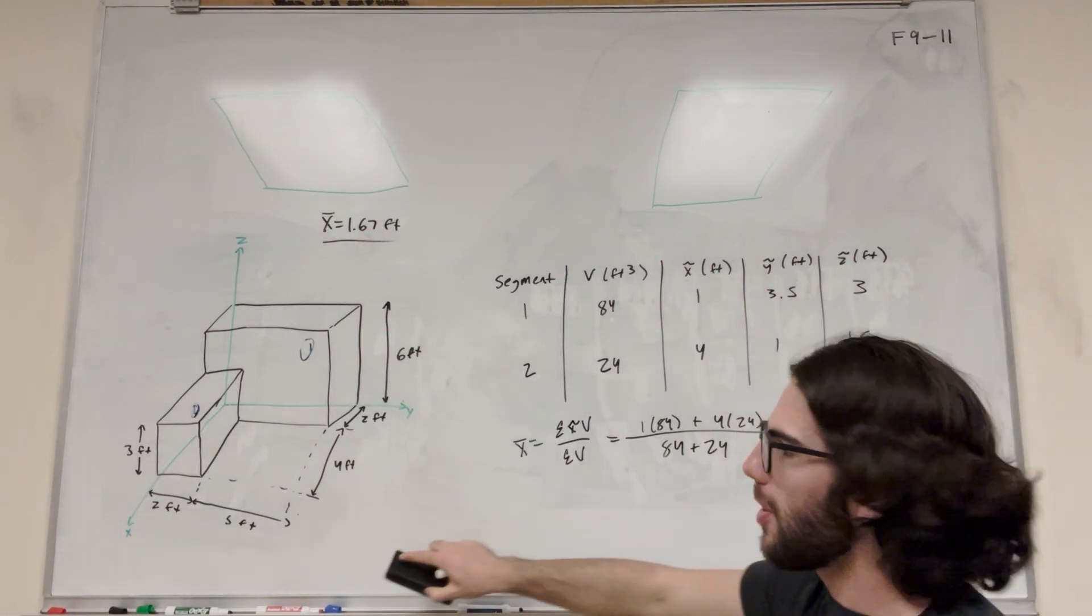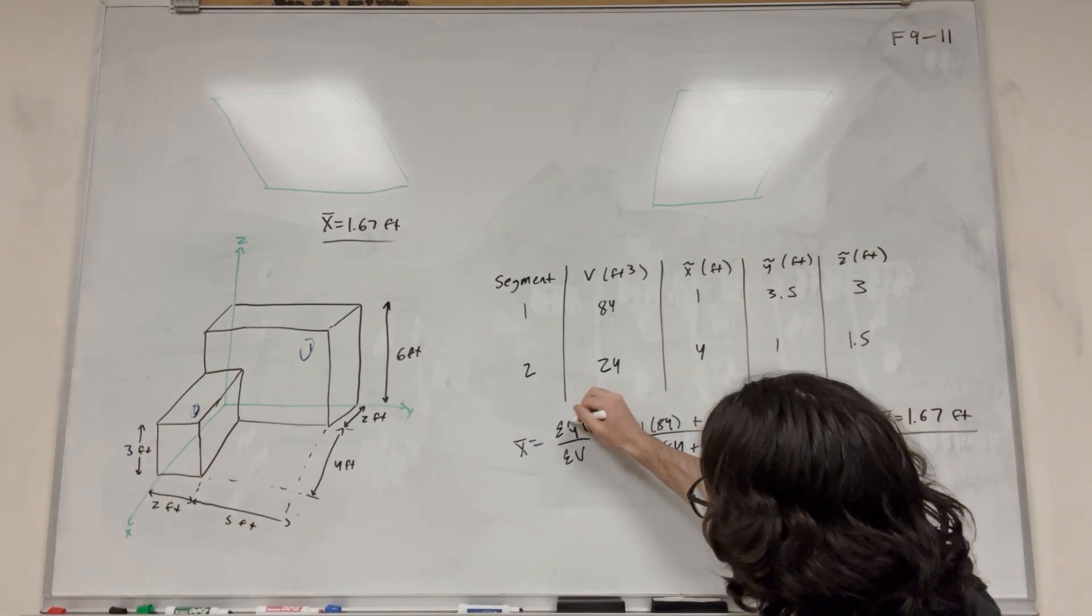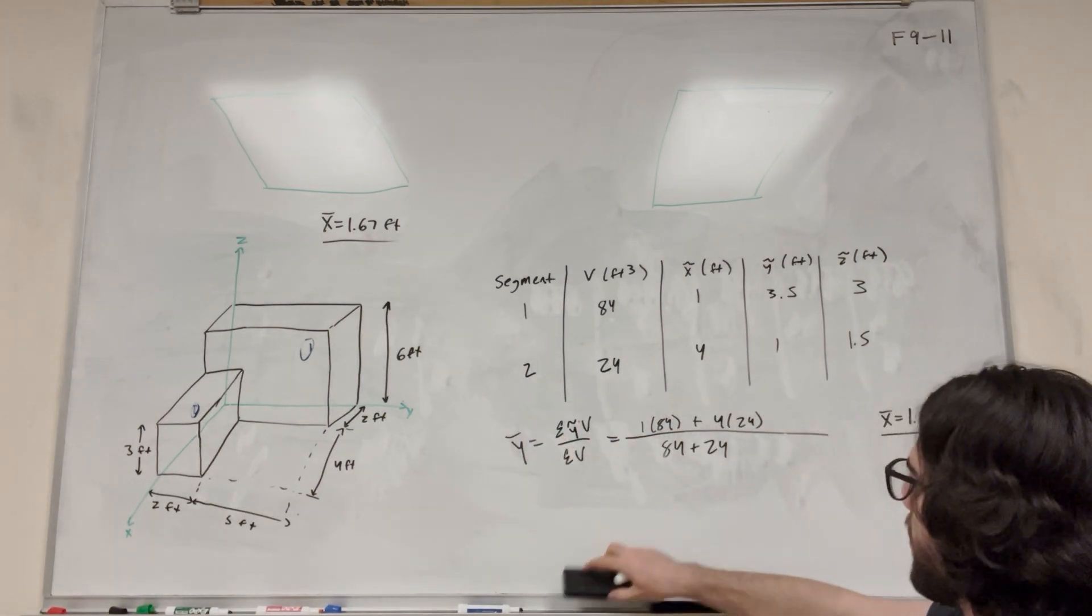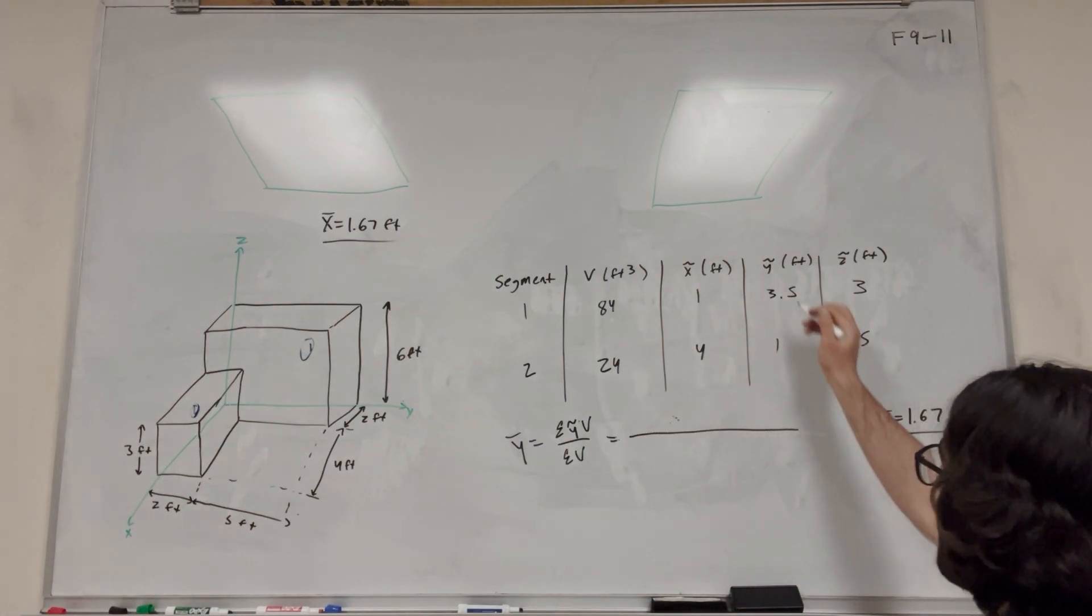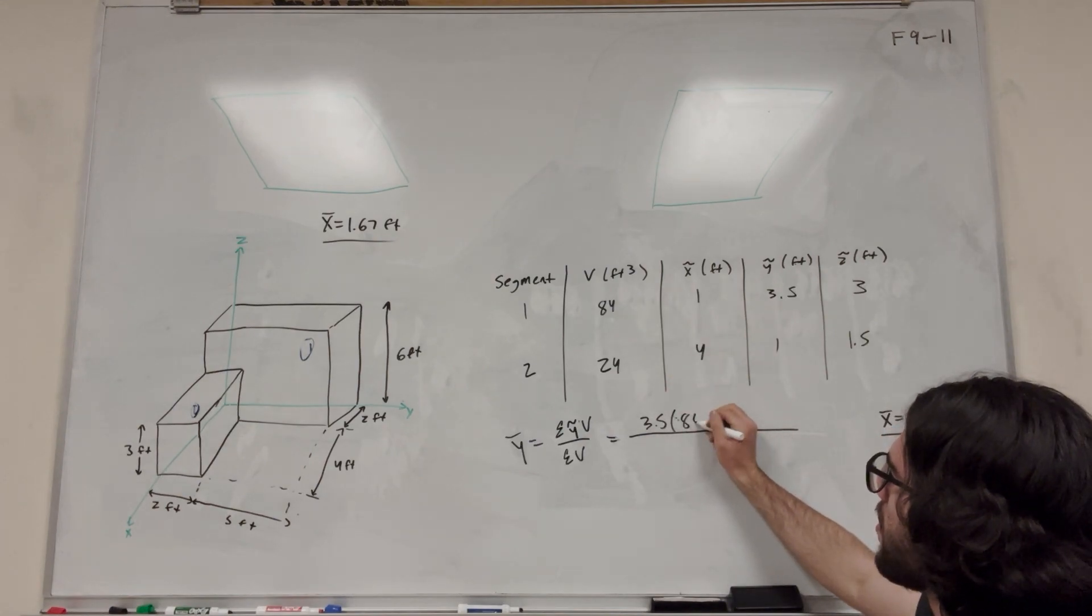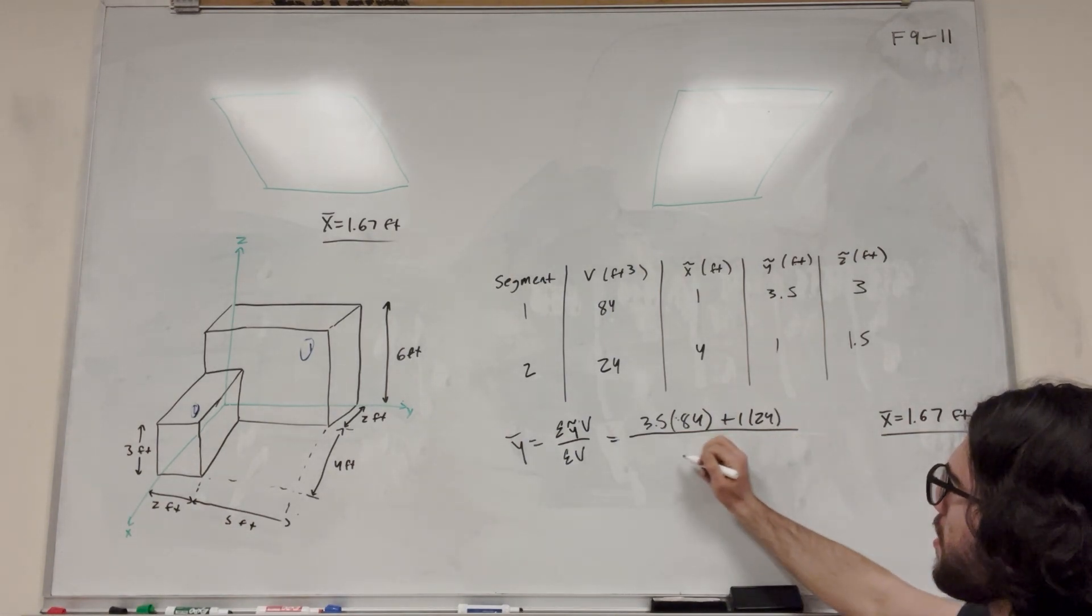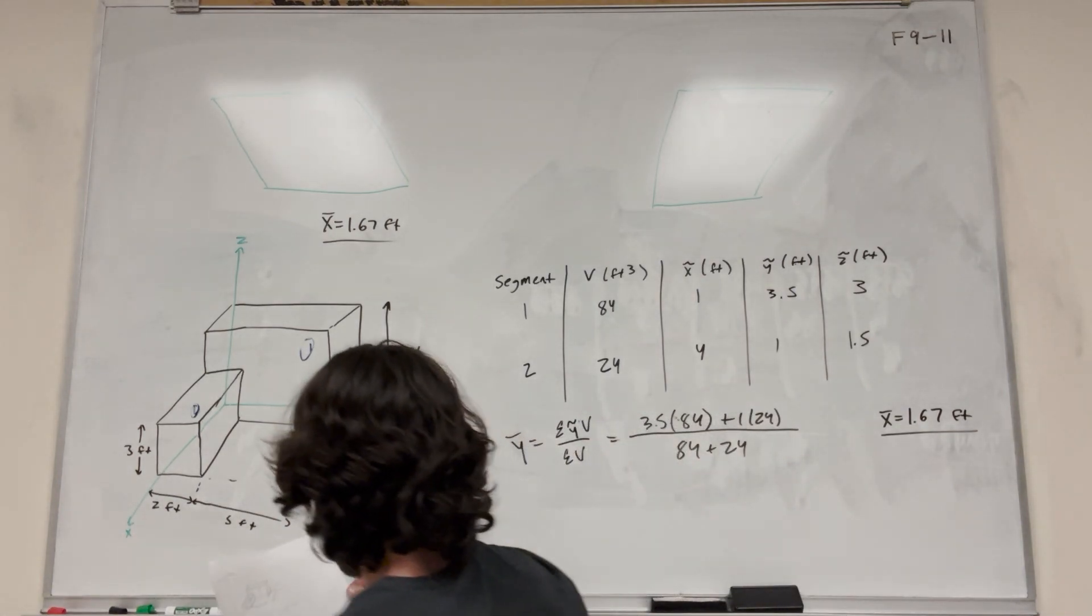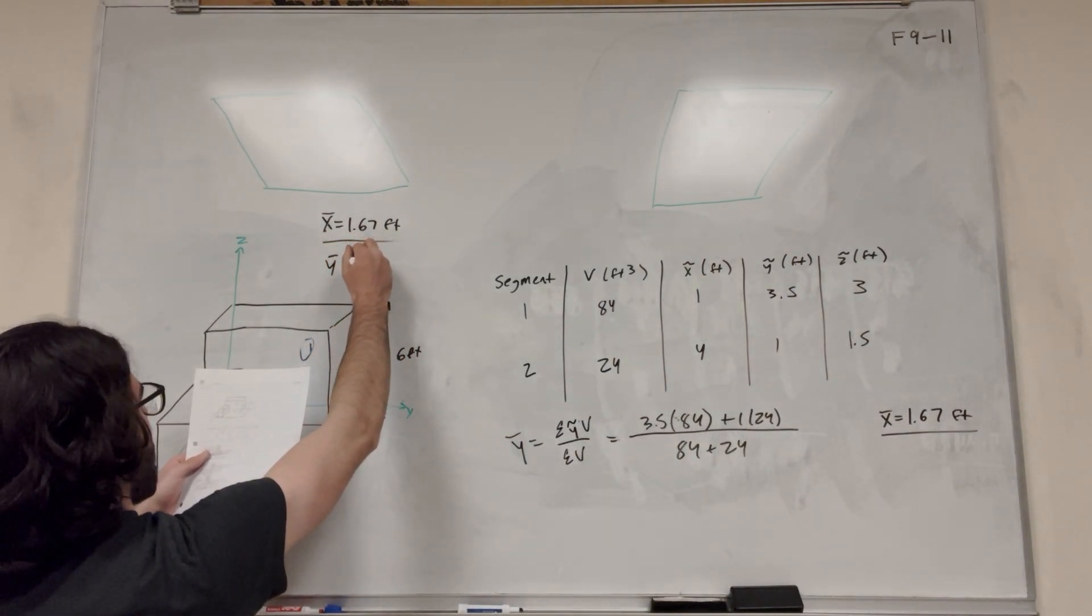So then similarly, y bar is going to be the same, but instead of the x tilde, we're going to add y tilde's. So let's do it again for the y's. So the first one is 3.5, and then its volume is 84. Then we're going to add that to the next, which is 1, and then it's 24. So then adding up, it's going to be 84 plus 24. Do the math on this, you get y bar is equal to 2.94 feet.